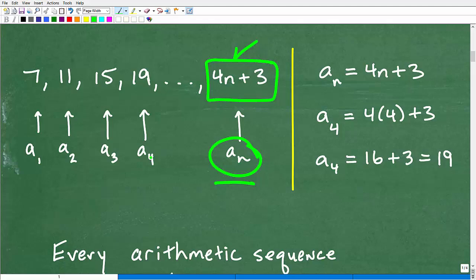if we wanted to find the value of the fourth term of this sequence, well, we know the answer is 19. So we could use this formula, right? So here it is. A sub n is equal to 4n plus 3.